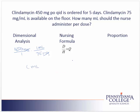We can also solve this problem using the nursing formula. We'll start with the desired amount, or doctor's order, which is 450 milligrams. We'll place this over what we have on hand, which is 75 milligrams. It is important that the labels from these two amounts match and cancel. Then we'll multiply by the quantity that the 75 milligrams was in, in this case, one milliliter. Our label will be milliliters — it's the only uncancelled label. We do the math, and we get six milliliters.